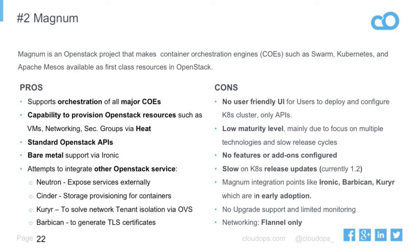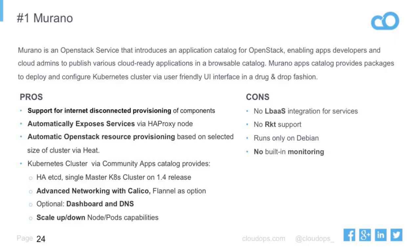Finally, Murano — the OpenStack application catalog — allows users or developers who don't even know how Kubernetes works to deploy a Kubernetes cluster with just a few clicks. You can get the latest release of Kubernetes 1.4, with add-ons like dashboard and DNS. You can scale up and scale down; it will automatically provision all VMs. There's also interesting Calico integration, so you can run VMs and Kubernetes workloads like the front end in the same tenant on the same networking data plane. The downside: there's still a lot of work to be done, like adding monitoring and more OpenStack integration.